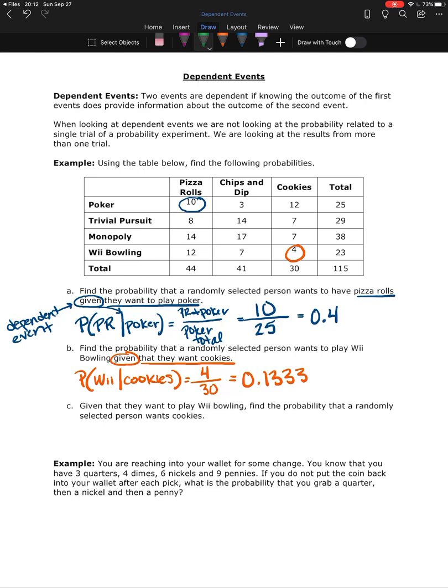One more example. Given that they want to play Wii Bowling, find the probability that a randomly selected person wants cookies. This is not the same question, even though we are looking at the same categories. And it's different because we've been given the people that want to do Wii Bowling. So we've been given the Wii Bowling, and then we're asked to find the probability that that person also wanted cookies.